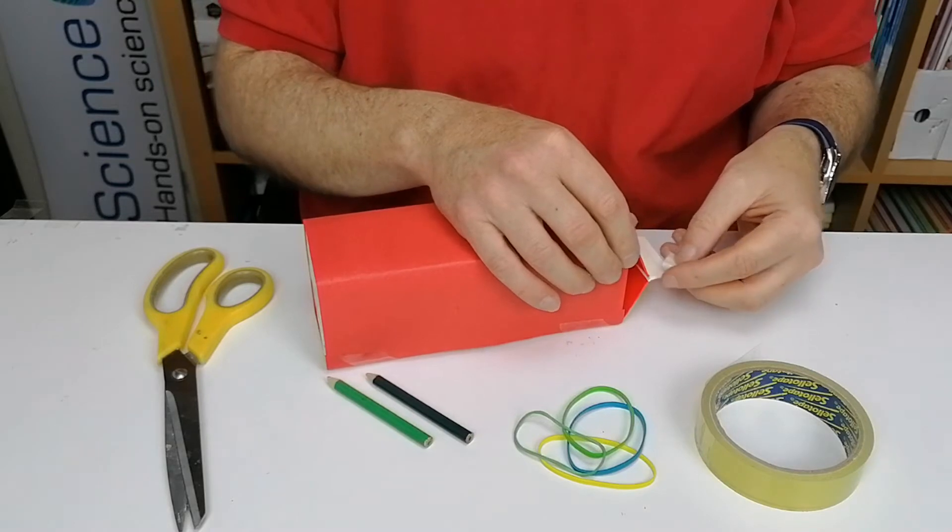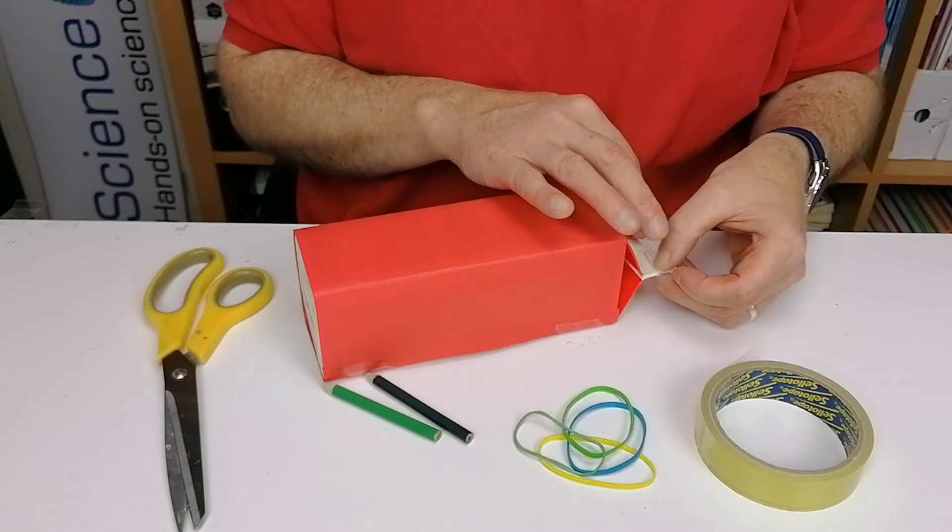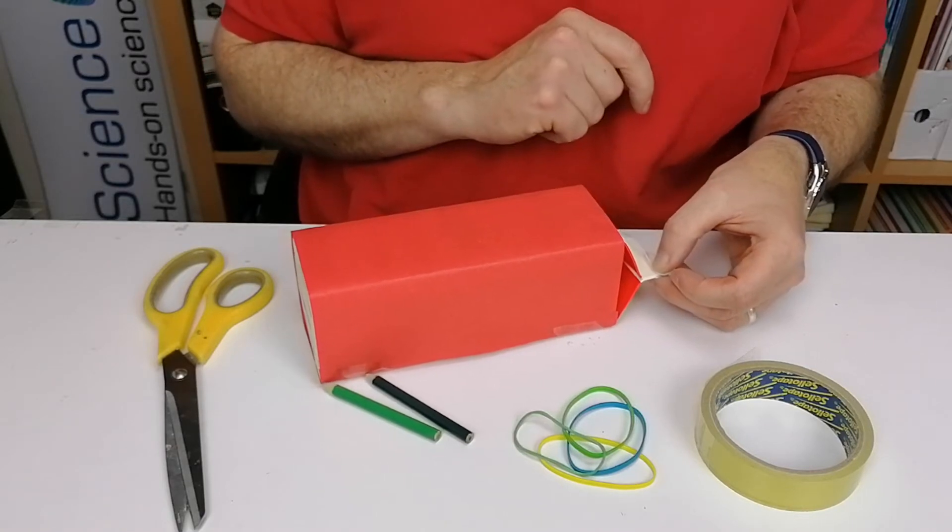And then we're going to tape this on to this end. So this end is going to be longer, that end is going to be shorter, and this middle section is going to be the length that it is. You can see now that the end of the carton has three different levels.